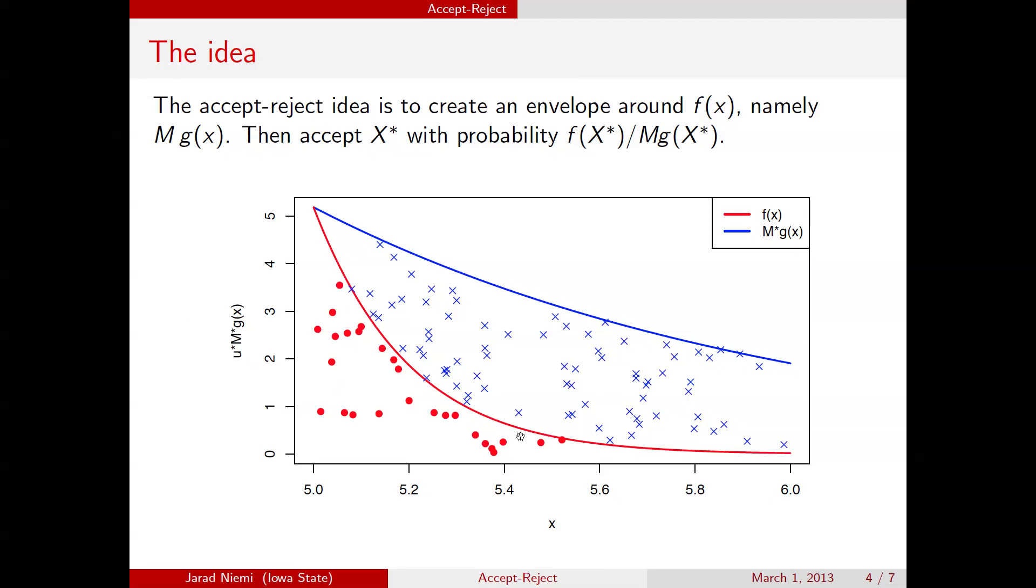And so we can see here over these 100 proposals, we get something that's starting to look like the density for f.